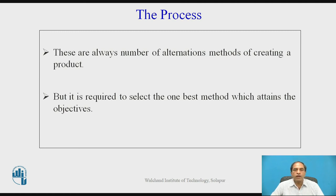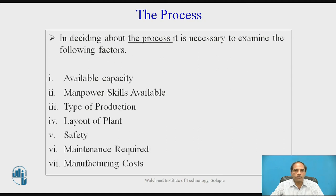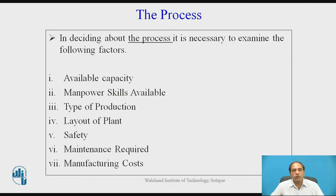What are the various aspects when talking about processes? Processes have many parameters that naturally have to be considered: the available capacity, the skill required for the process, the type of production — which may be mass, job, batch, continuous, or fixed — the layout of the plant, safety requirements, maintenance requirements, and the manufacturing cost of the particular process.